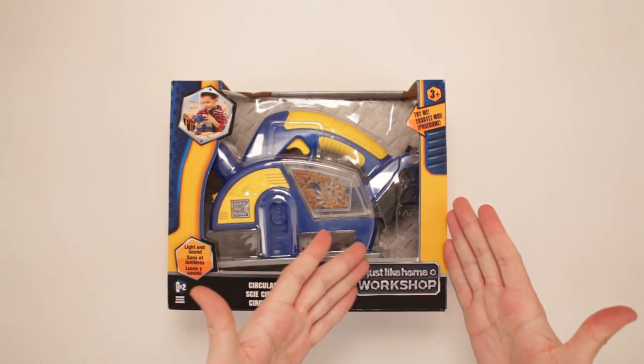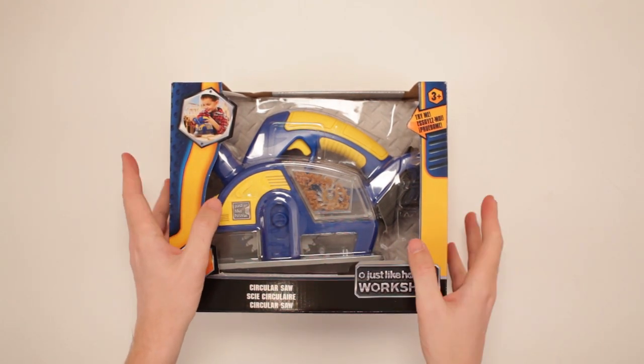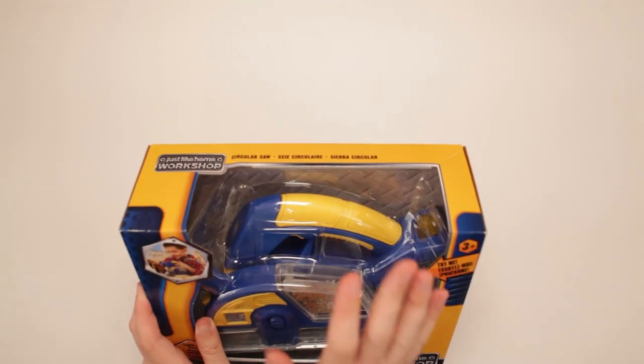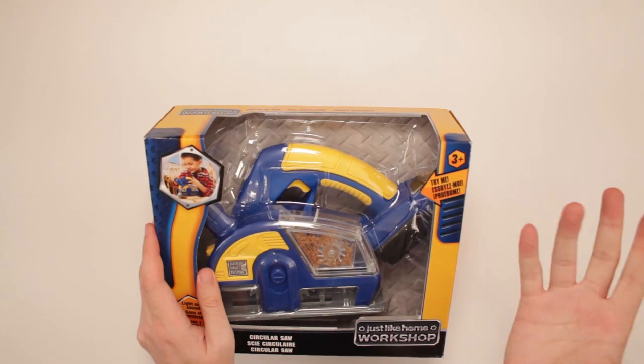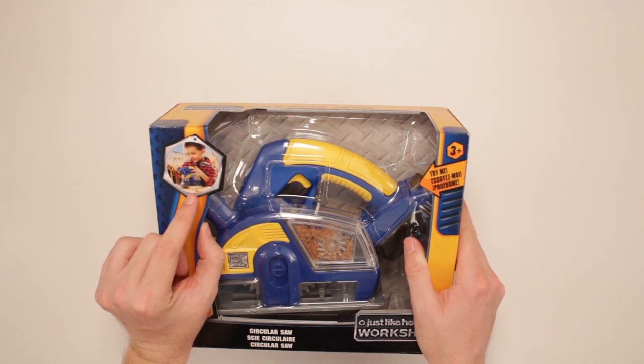This is Just Like Home Workshop circular saw. It includes lights and sounds. Try me. I did, and I don't know how it works yet, so I guess I have to unbox it. There's a child there sawing things up, that's good.